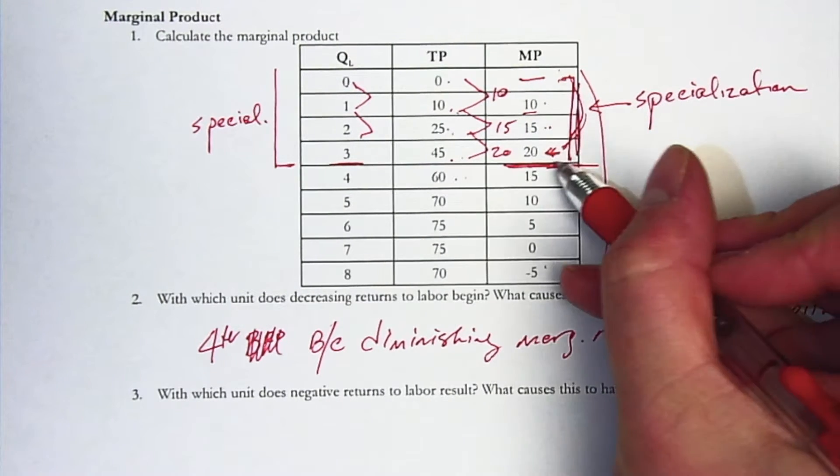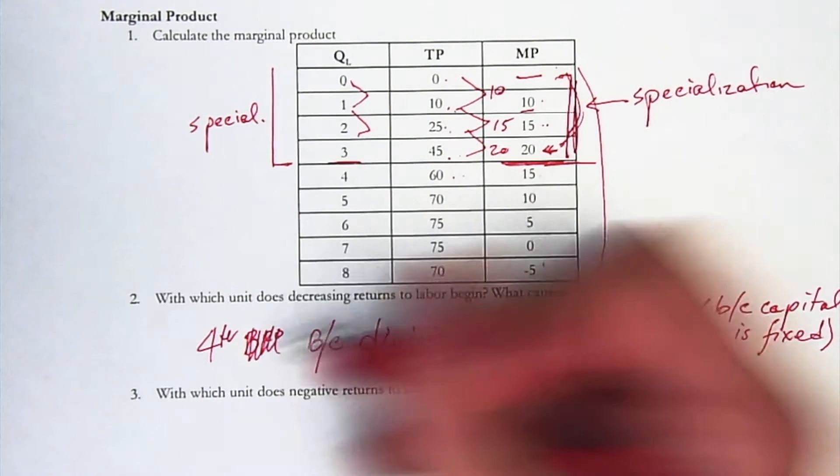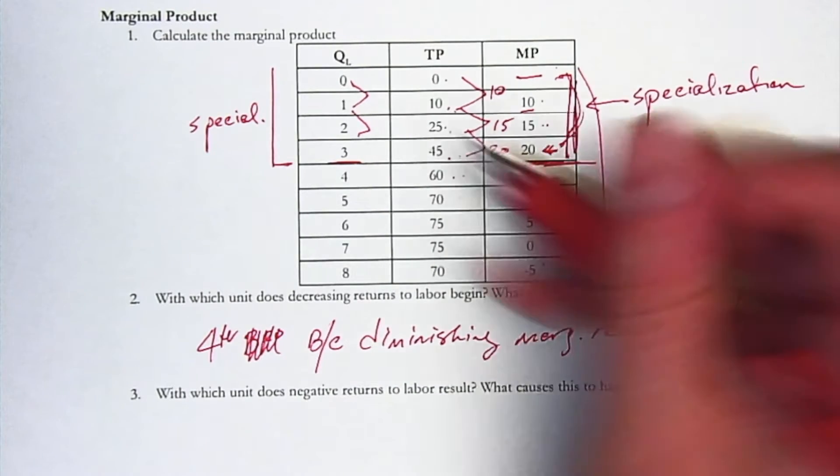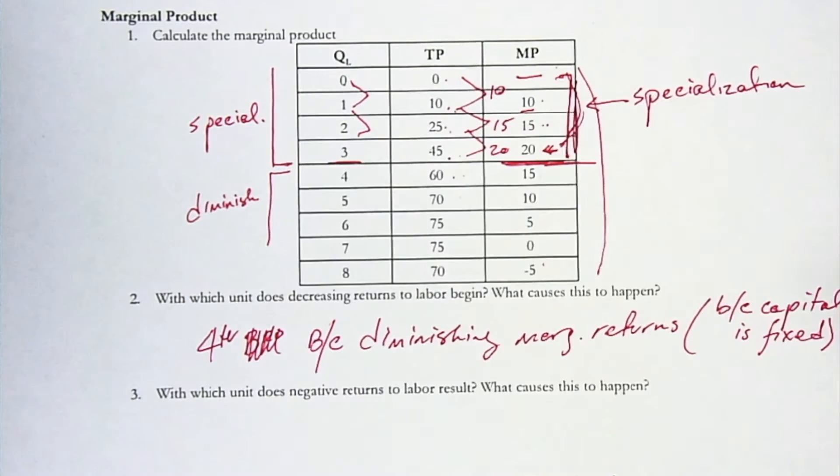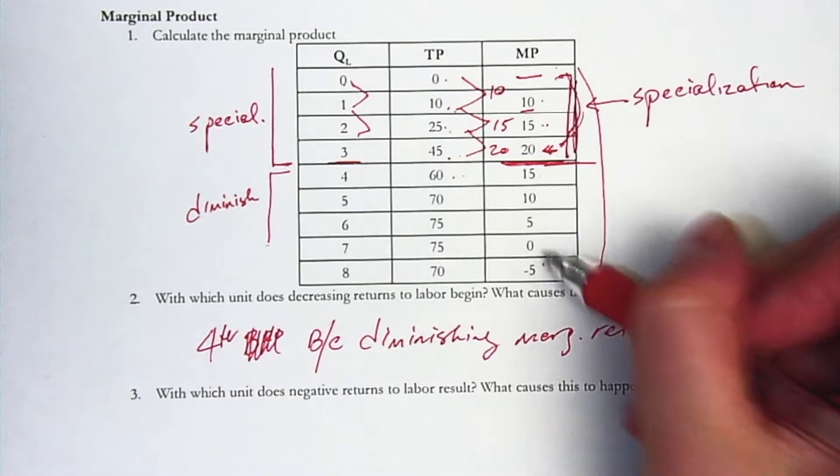It's going up. And then after that, with that fourth worker, that fourth worker is actually where the diminishing returns start to set in. Because it's 15, 10, 5, 0, negative 5.